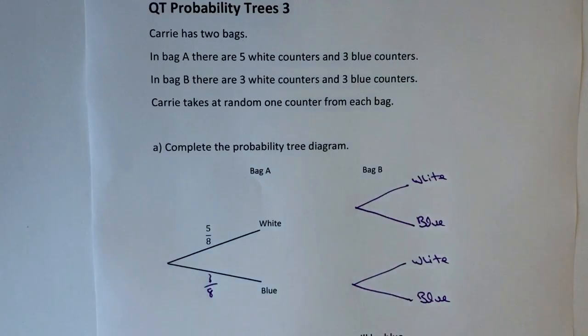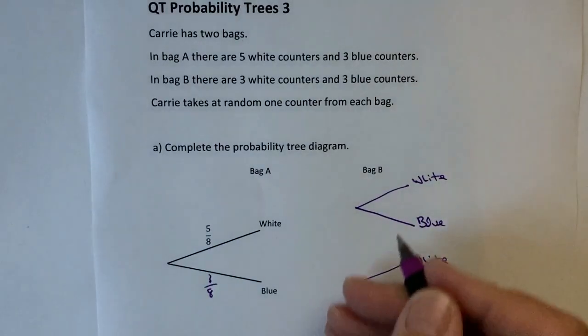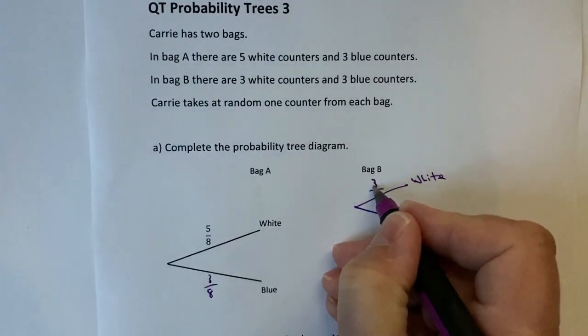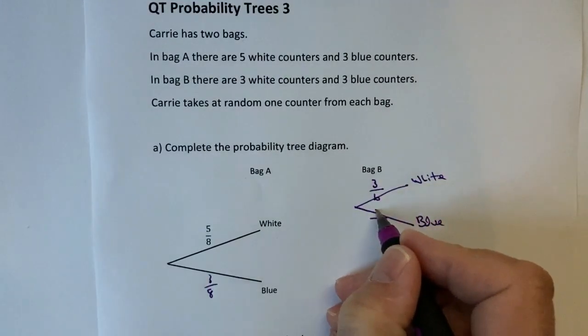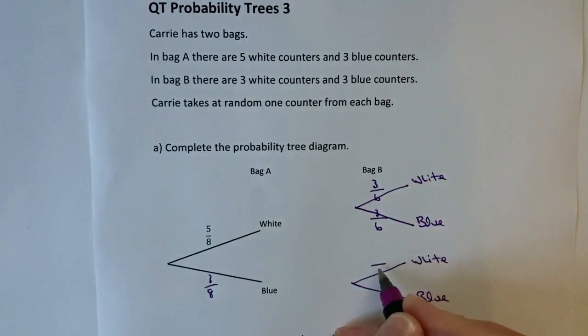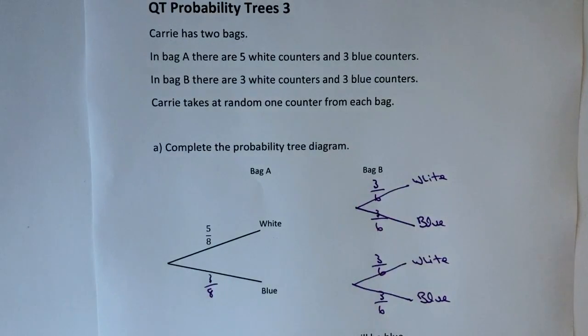There's six counters altogether of which three are white and three are blue. So we can write three out of six for each of these probability branches. That would complete the probability tree diagram.